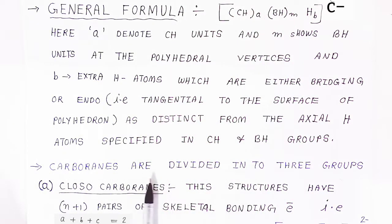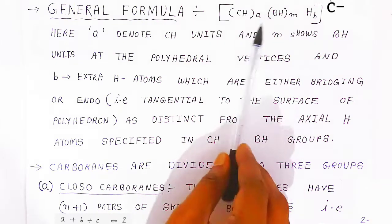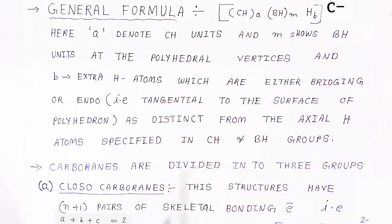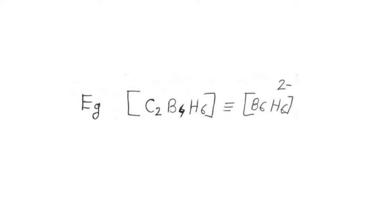Carboboranes are divided into three groups. The first is called closo-carboboranes. These structures have n+1 pairs of skeleton bonding electrons, that is when A plus B plus C equals 2 electrons. For example, C2B4H6 which corresponds to B6H6 2-minus.